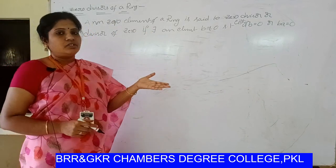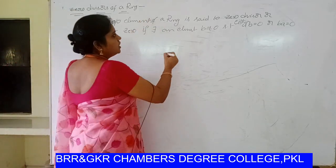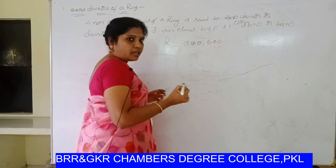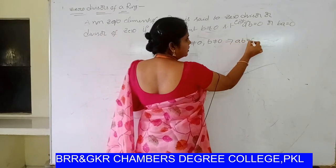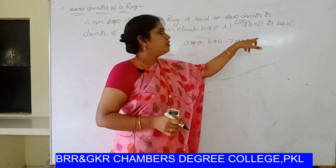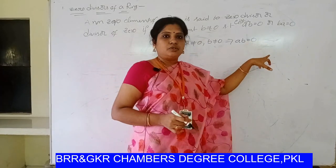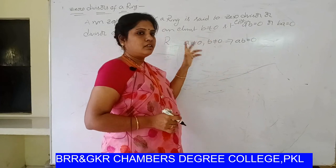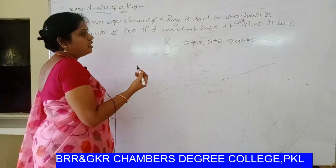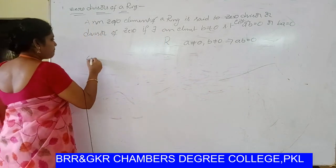That means if there exist two non-zero elements in R, a not equal to zero and b not equal to zero, and their product is equal to zero, then we say that a and b are zero divisors of a ring R. I give an example of zero divisors of a ring.